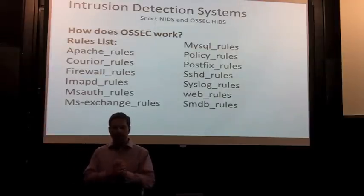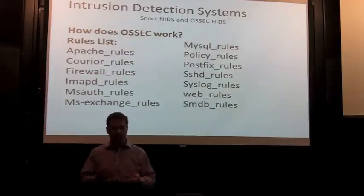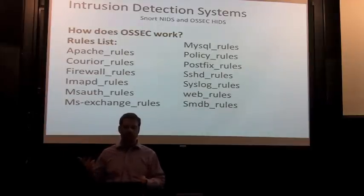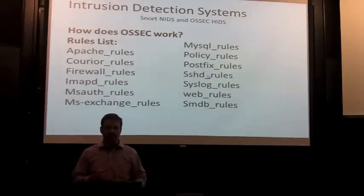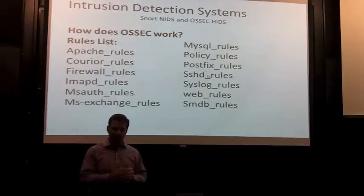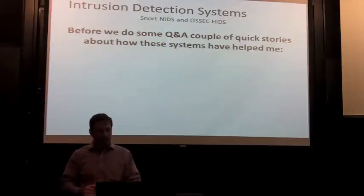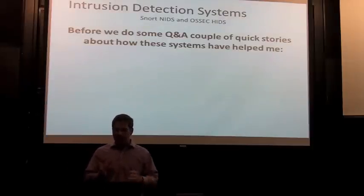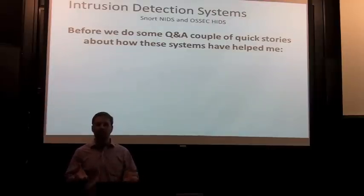This is a partial list of how OSSEC categorizes its rule sets — you can see the areas they've segregated rules into. I'm mostly a Windows shop, so most of mine come from the MS auth rule table. But I also get a lot of alerts for SSHD from people trying to break into my SSH terminal at work. I'll do a couple of quick stories about how this technology has helped me, then a brief tour of the graphical interface, and then we can do Q&A.